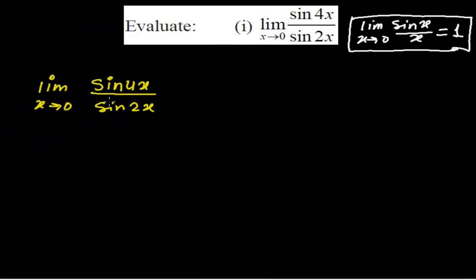This is our formula and we have to solve this problem based on this formula. So we have to convert this expression into this form. To do so, I am writing limit x tends to 0, here sin 4x divided by 4x, I am writing 4x myself.